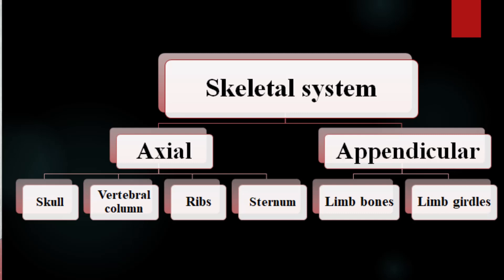The skeletal system consists of axial skeleton and appendicular skeleton. Axial skeleton is formed by skull, vertebral column, ribs and sternum, whereas the appendicular skeleton consists of limb bones and limb girdles.